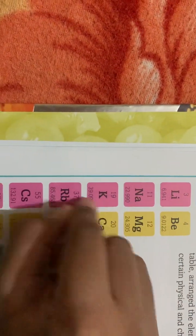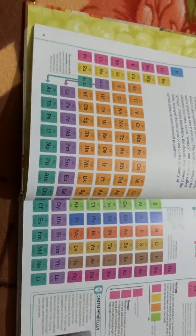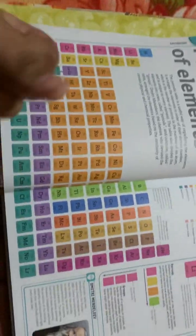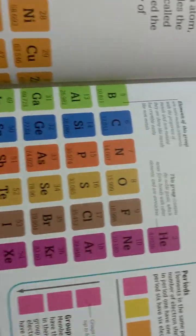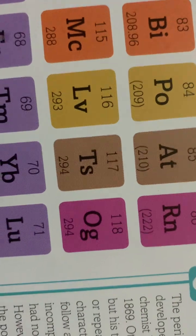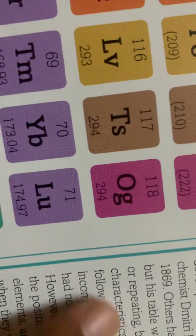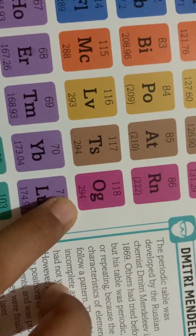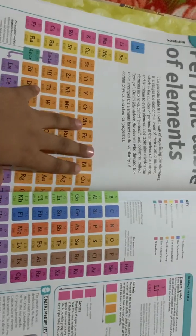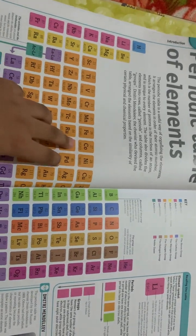They also have these numbers like 1.00079. Some elements, take oganesson—its atomic mass is 294. Mostly you'll find the element's atomic number to be doubled in their atomic mass.